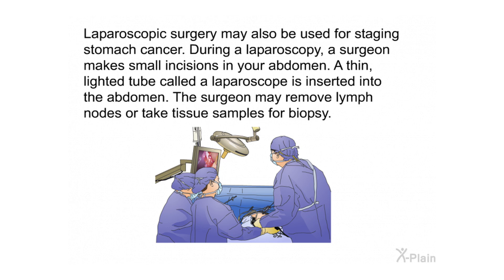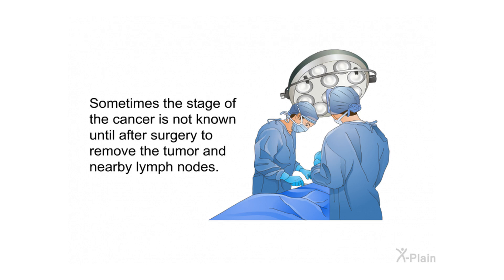Laparoscopic surgery may also be used for staging. During a laparoscopy, a surgeon makes small incisions in your abdomen and inserts a thin lighted tube called a laparoscope. The surgeon may remove lymph nodes or take tissue samples for biopsy. Sometimes the stage of the cancer is not known until after surgery to remove the tumor and nearby lymph nodes.